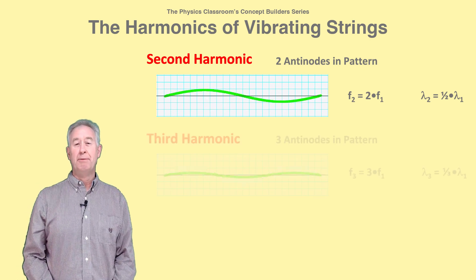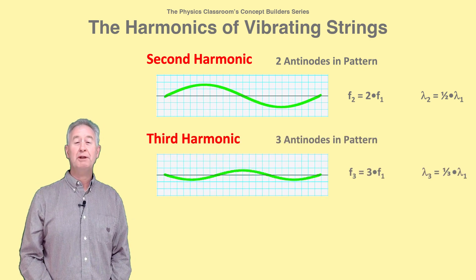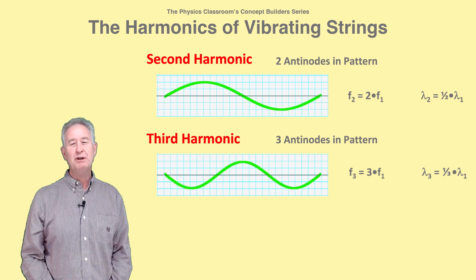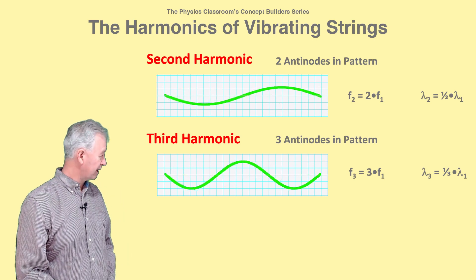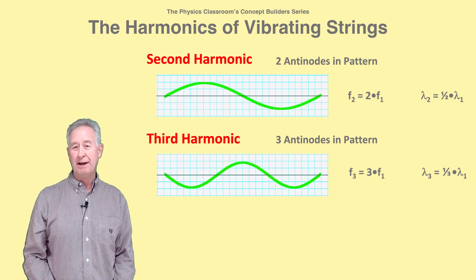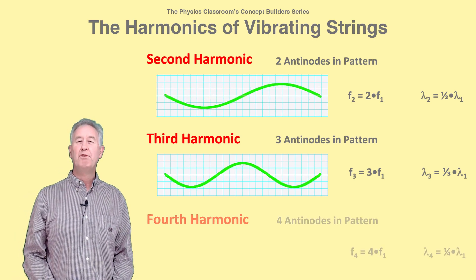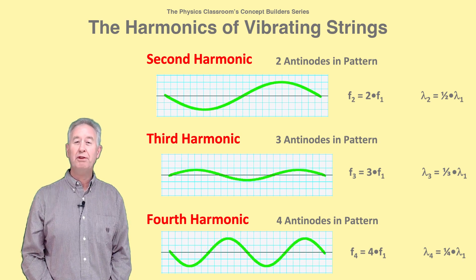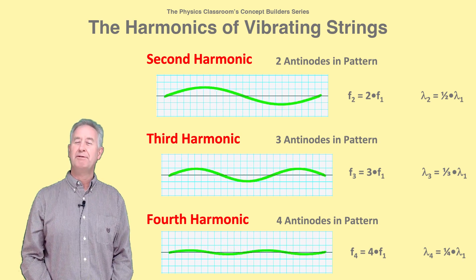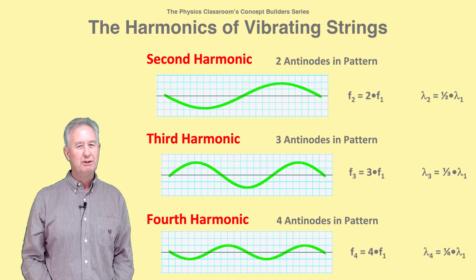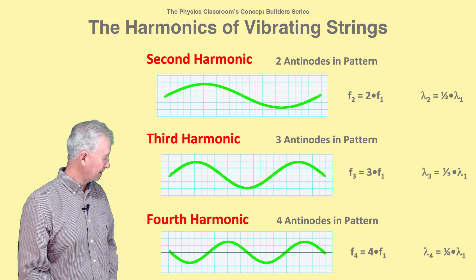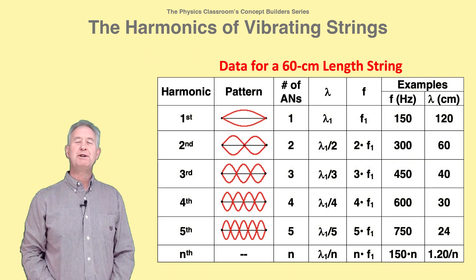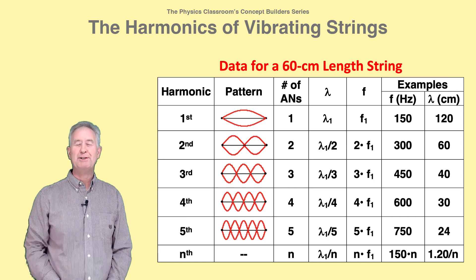The third harmonic has three times the frequency and one-third the wavelength of the first harmonic, and you know it's the third harmonic by the three antinodes in the pattern. The fourth harmonic has four times the frequency and one-fourth the wavelength of the first harmonic, and you know it's the fourth because of its four antinodes. You likely noticed a pattern in these patterns.